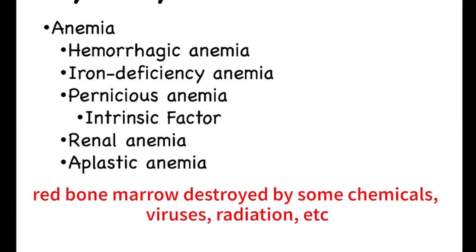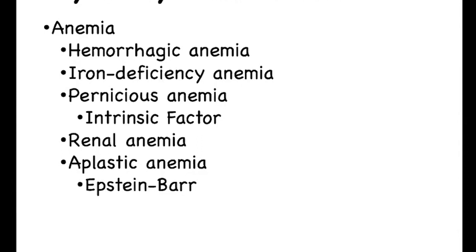Aplastic anemia occurs when the red bone marrow has been destroyed — this could be permanent or temporary. There are certain chemicals that can destroy the red bone marrow, such as benzene and gasoline, certain pesticides and herbicides, some chemicals used in chemotherapy, as well as radiation. There are also some viruses such as the herpes virus and Epstein-Barr, which causes mononucleosis.